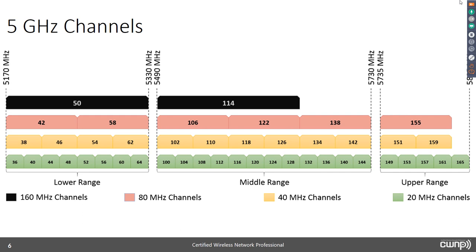160 MHz channels — black, the light is out. It's simply not a viable option in the real world. We would need another 300 to 400 MHz of spectrum to use them effectively. The FCC defines channels 50 and 114 as true 160 MHz channels, and the IEEE standard allows an 80+80 configuration bonding channels like 138 and 155, but we just don't have the space. My general recommendation: always avoid 160 MHz, almost always avoid 80 MHz, and use 40 MHz only because you need it, not just because you can.